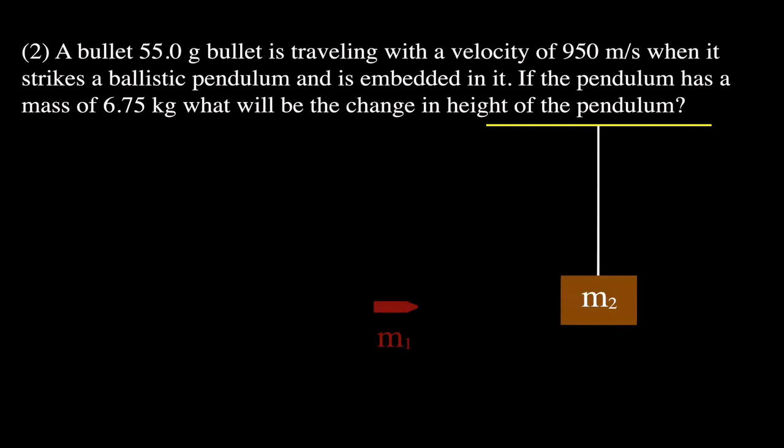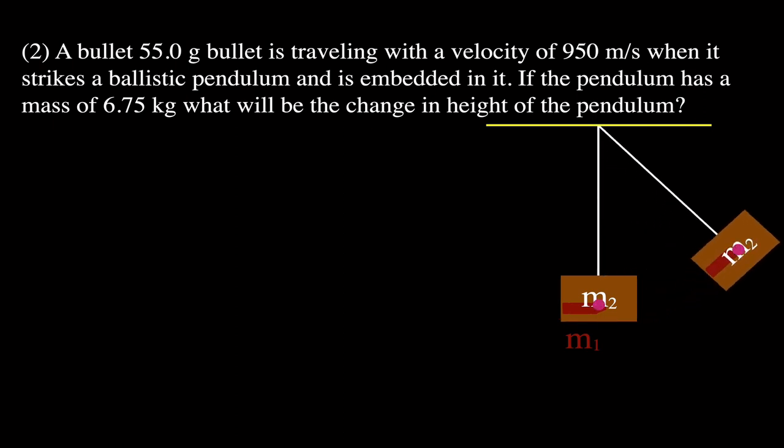In example problem number two, we're going to find the change in height of the ballistic pendulum. When the bullet strikes and is embedded in the pendulum, the pendulum swings up to a new height — we want to know what that change in height is, given the initial velocity. We have a 55-gram bullet traveling at 950 meters per second that strikes and embeds in a ballistic pendulum with a mass of 6.75 kilograms.